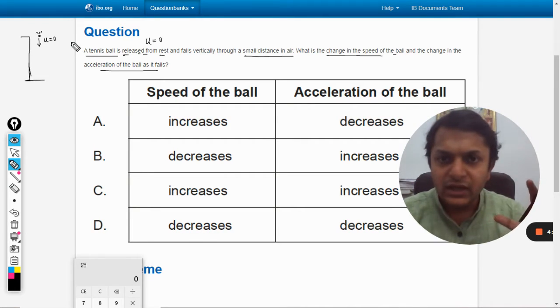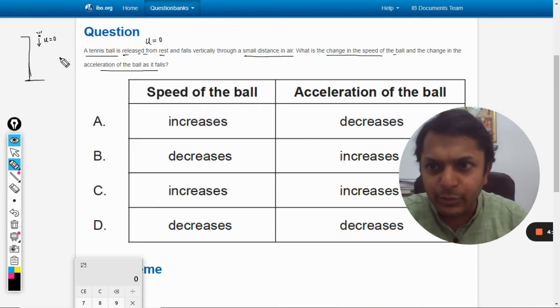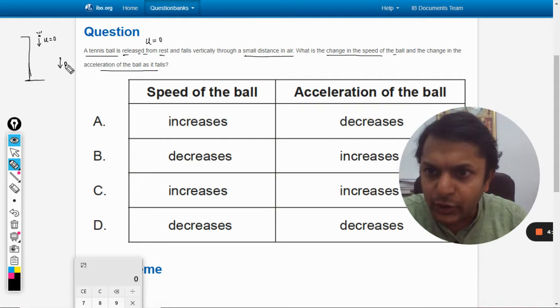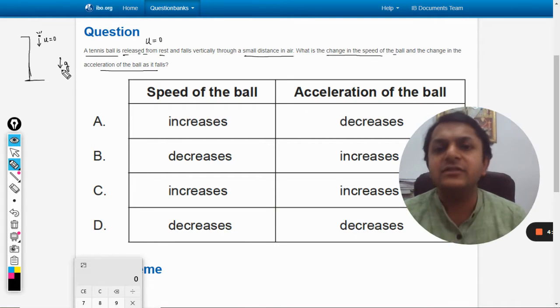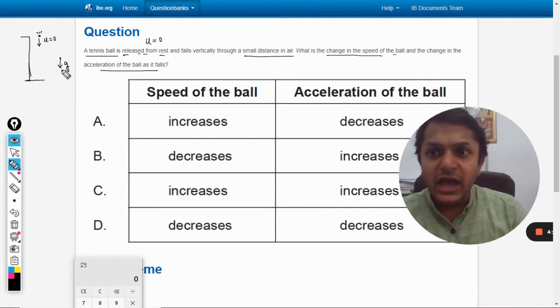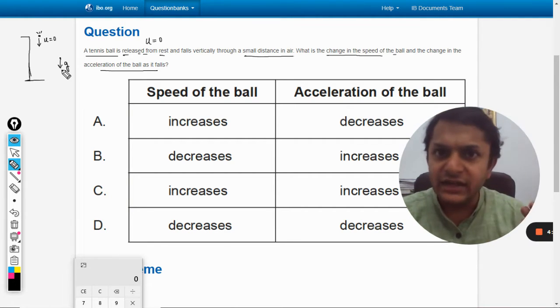Obviously it will be acted upon by the force that is weight, so it is acted upon by gravity. It would be getting acceleration due to gravity, it will be g, and velocity will definitely increase because as it will fall the velocity is bound to increase.